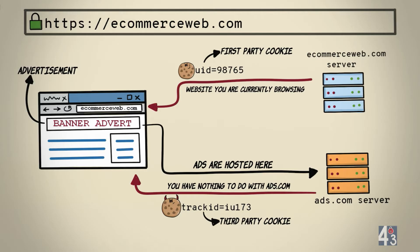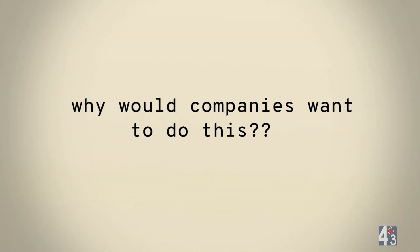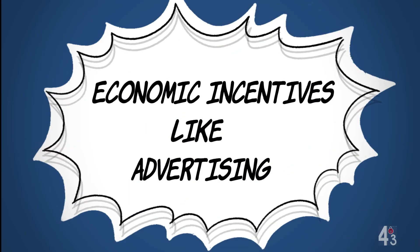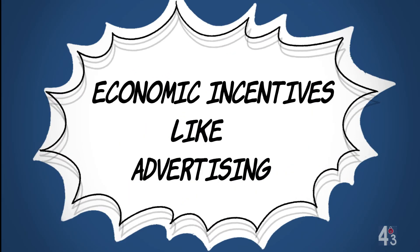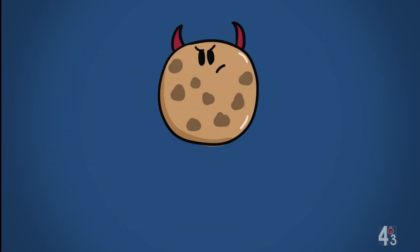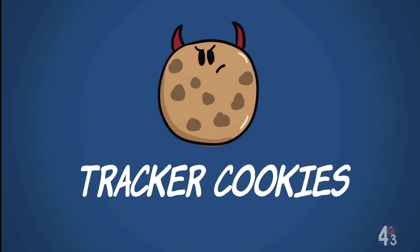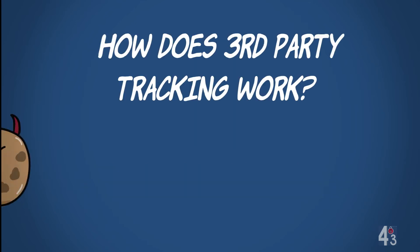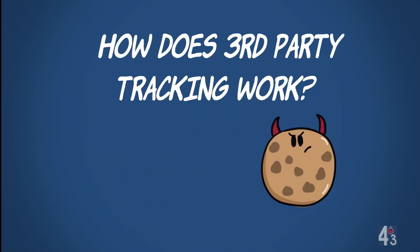Third-party cookies are also referred to as tracker cookies. Economic incentives like advertising, for example, are a primary reason for the birth of third-party or tracker cookies. So how does third-party tracking work?